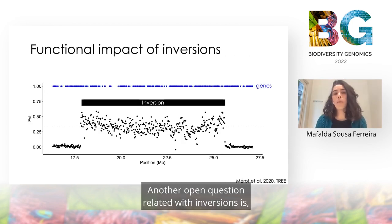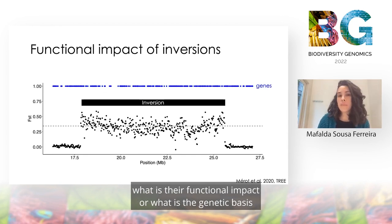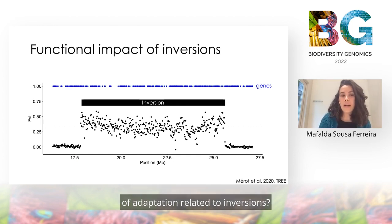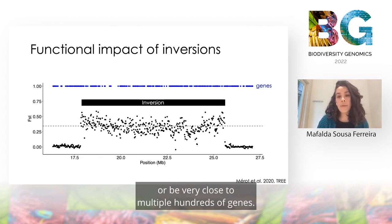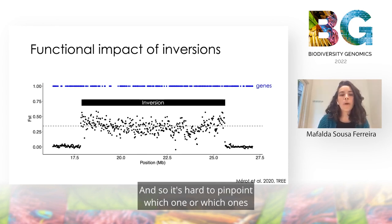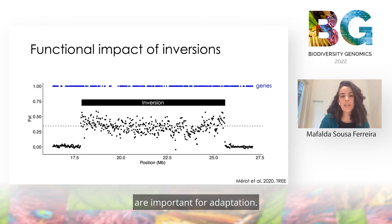Another open question related to inversions is what is their functional impact, or what is the genetic basis of adaptation related to inversions? This is because inversions may overlap or be very close to multiple hundreds of genes, and so it's hard to pinpoint which one or which ones are important for adaptation.